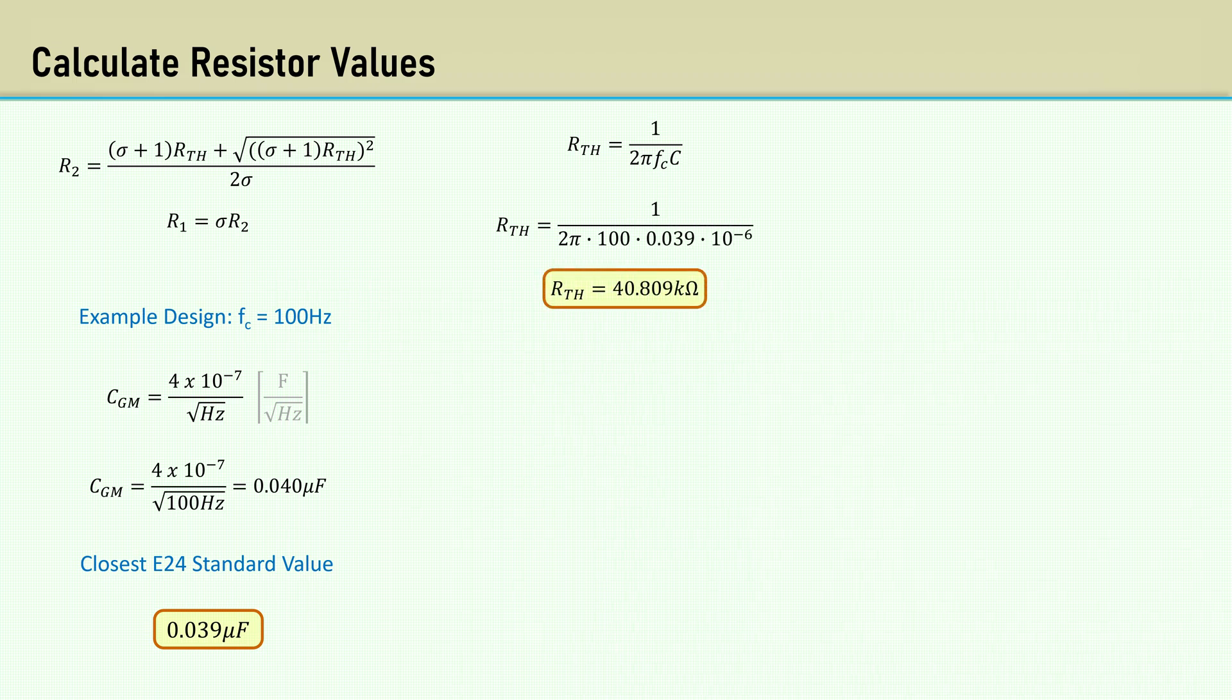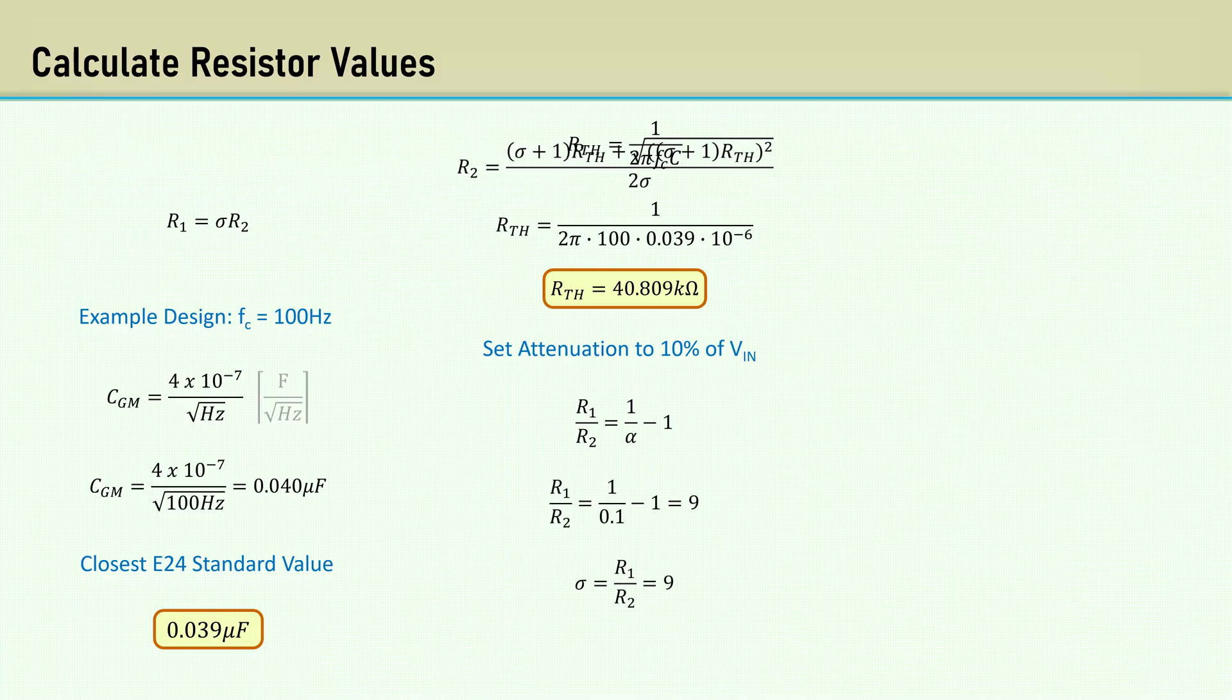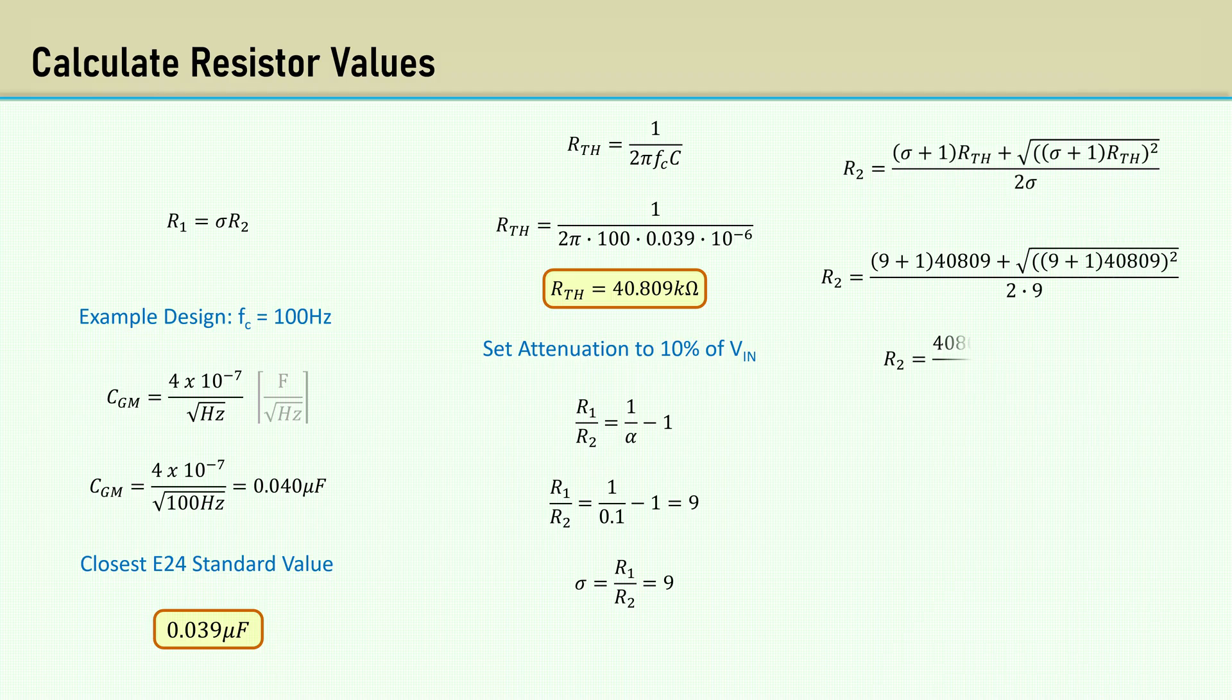The R-thevenin resistance comes out to 40.809 K. Set the attenuation to 10% of VN. That yields a sigma of 9. Plugging all the numbers in gives us a value for R2 as 45.343 K. Then multiply R2 by sigma, and we get R1, which is 408.087 K.